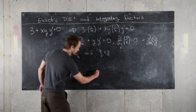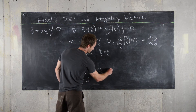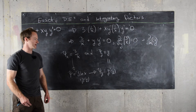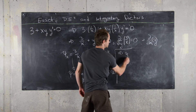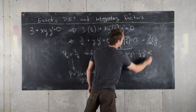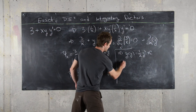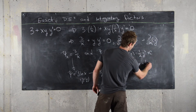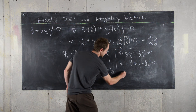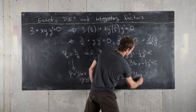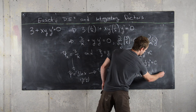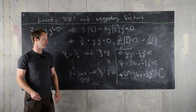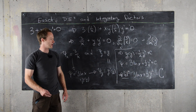Now take the derivative with respect to y: ψ_y equals g prime of y. That gives us the differential equation g prime of y equals y, so g of y equals 1/2 y squared plus some constant. This tells us that ψ equals 3 natural log of x plus 1/2 y squared plus a constant, which means our solution is given implicitly by 3 natural log of x plus 1/2 y squared equals C, absorbing the constant of integration. That's the final answer.